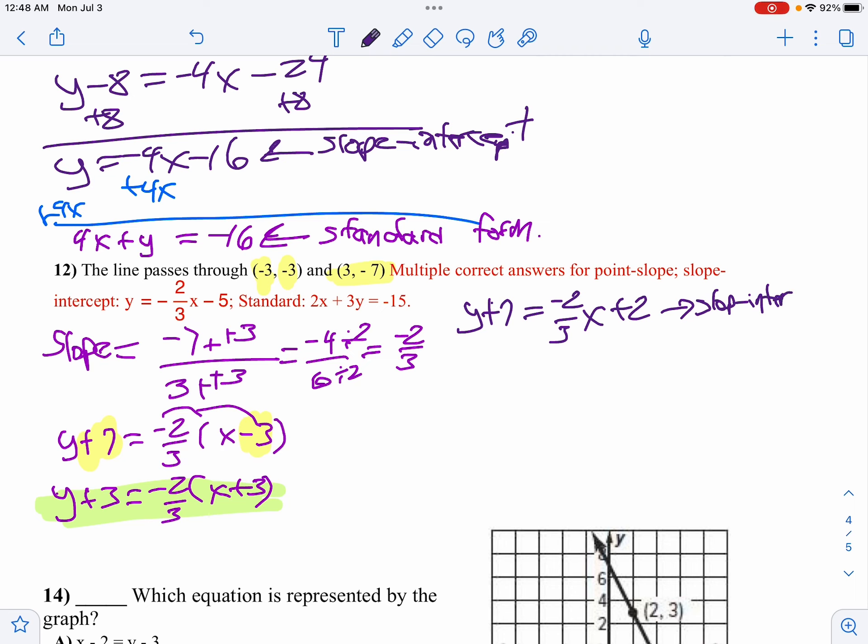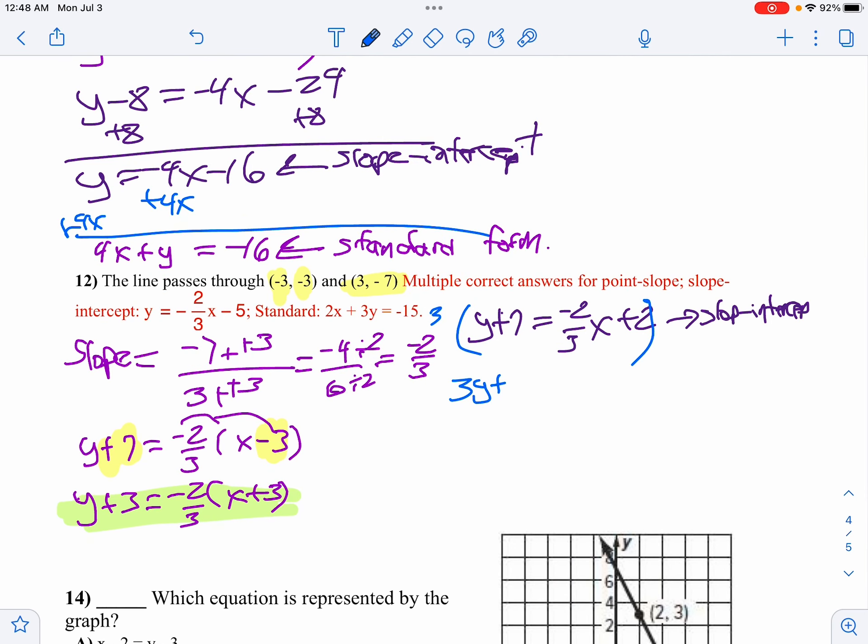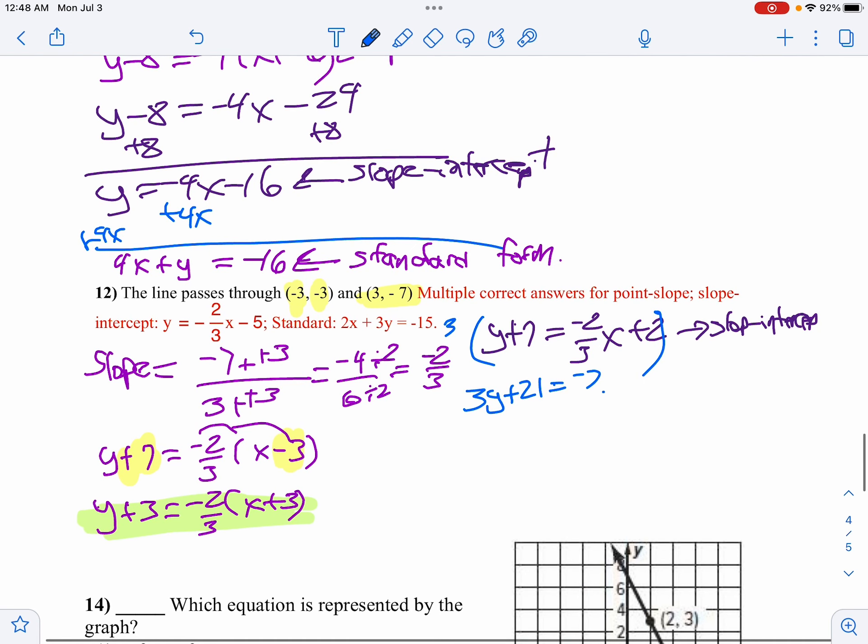We have to do a little bit more now to put this in standard form. Remember, standard can't have any fractions. So to change this to standard form, I think what I'll do is I'll multiply everything by my fraction. I'm going to clear my fractions just like I did in chapter 1. So I'll get 3y plus 21 equals negative 2x plus 6. Notice the reason I multiply by 3 is to get my 3's to reduce. So I get negative 2x and then 3 times 2 is 6.